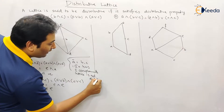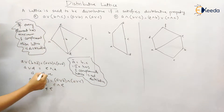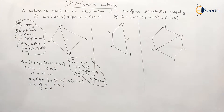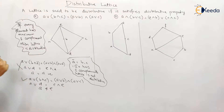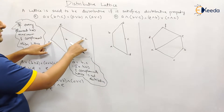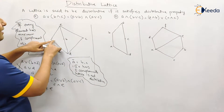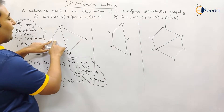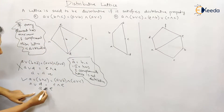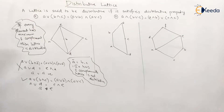The lattice is not distributive. Now we need to check which pair causes this. Therefore in the exam, since I know a has two complements, I will take the pair a, b, c and show that it is not satisfying the distributive property. Therefore it is not a distributive lattice.